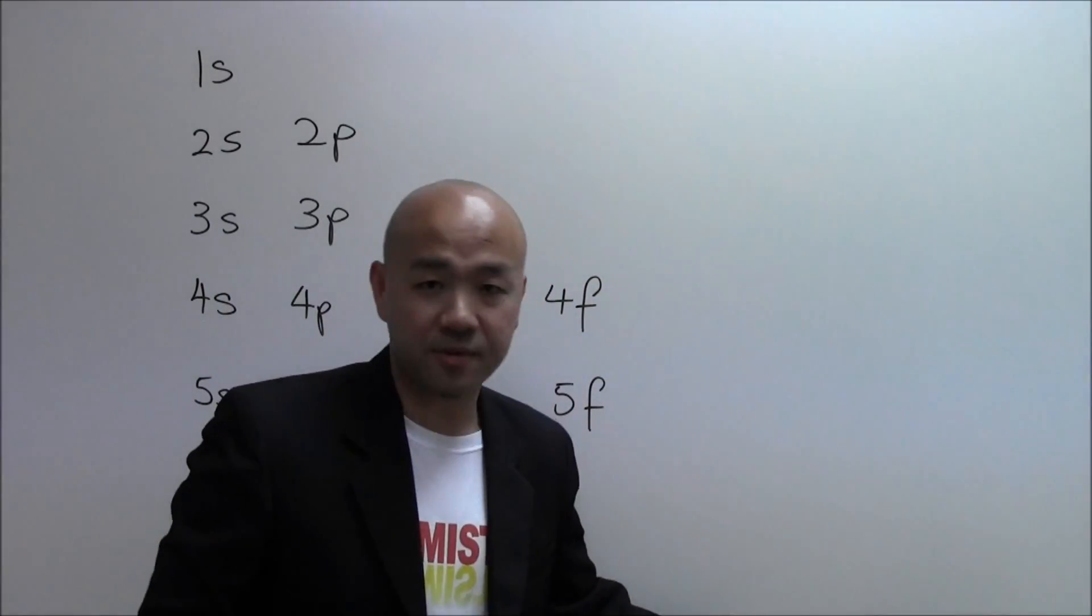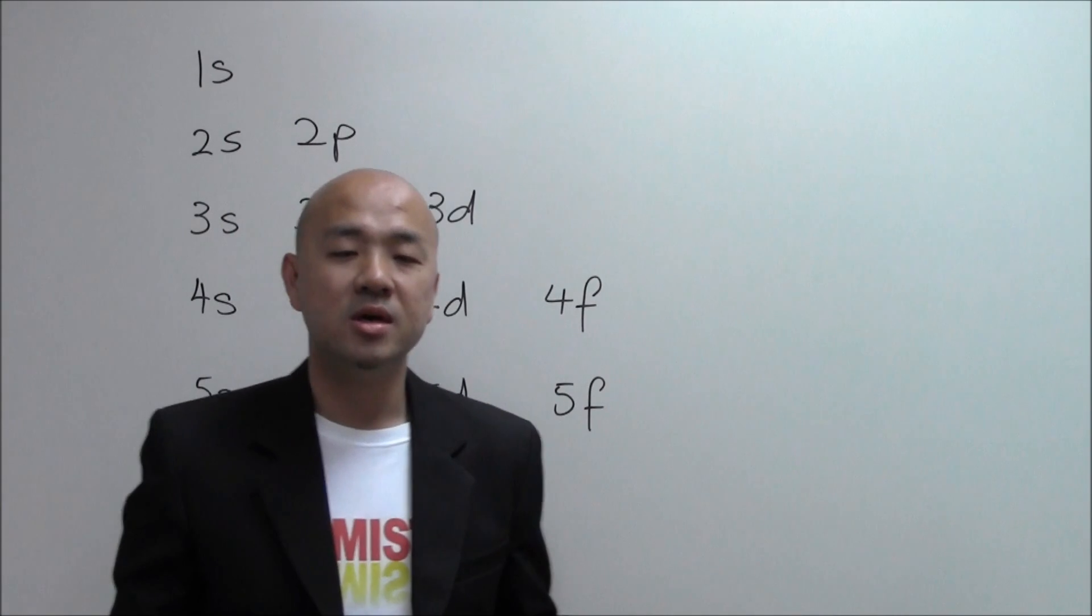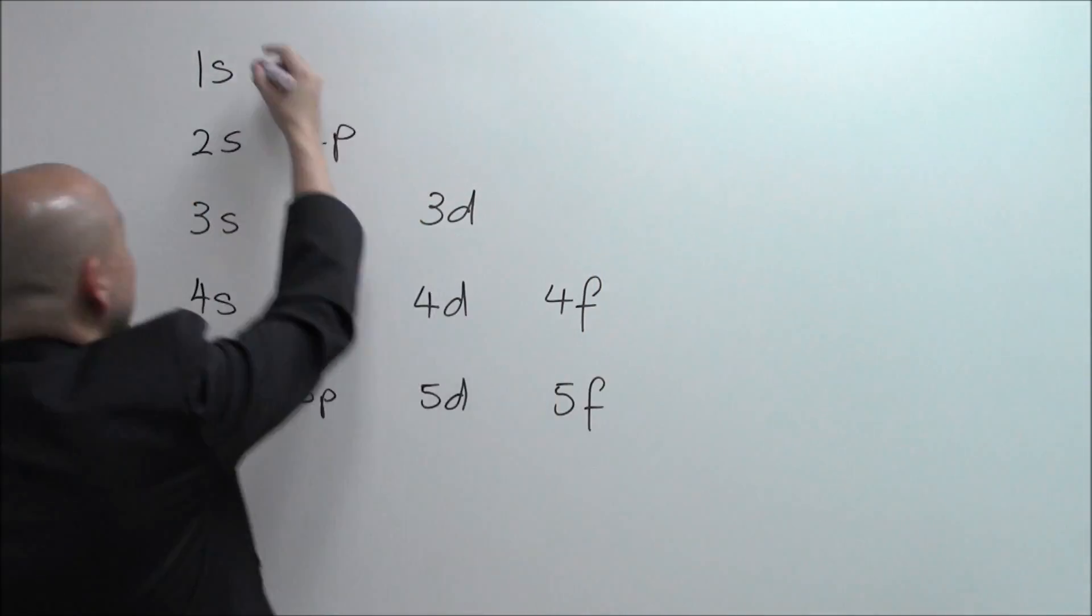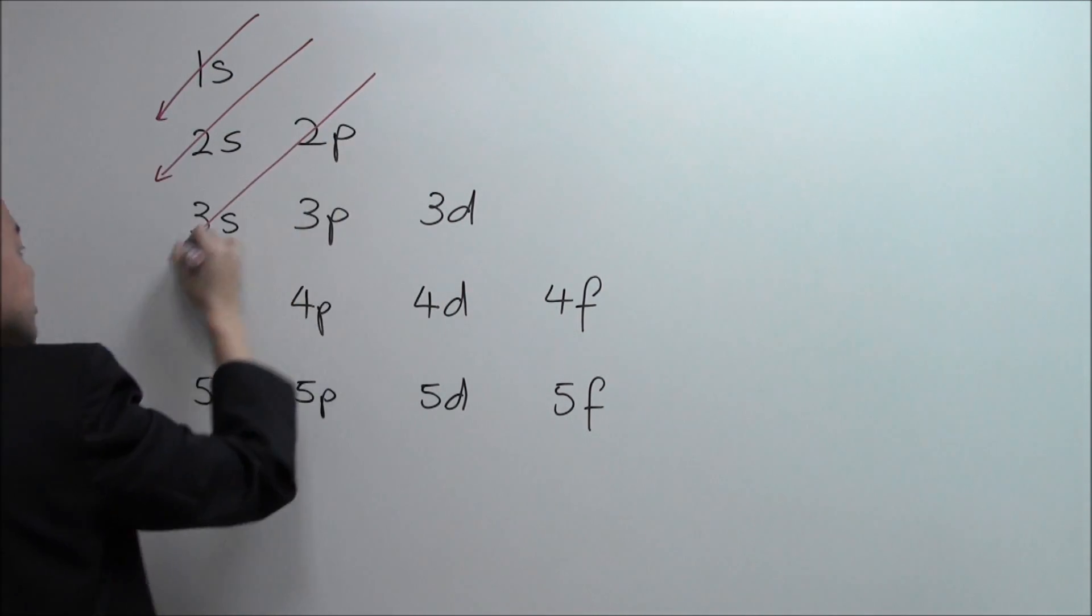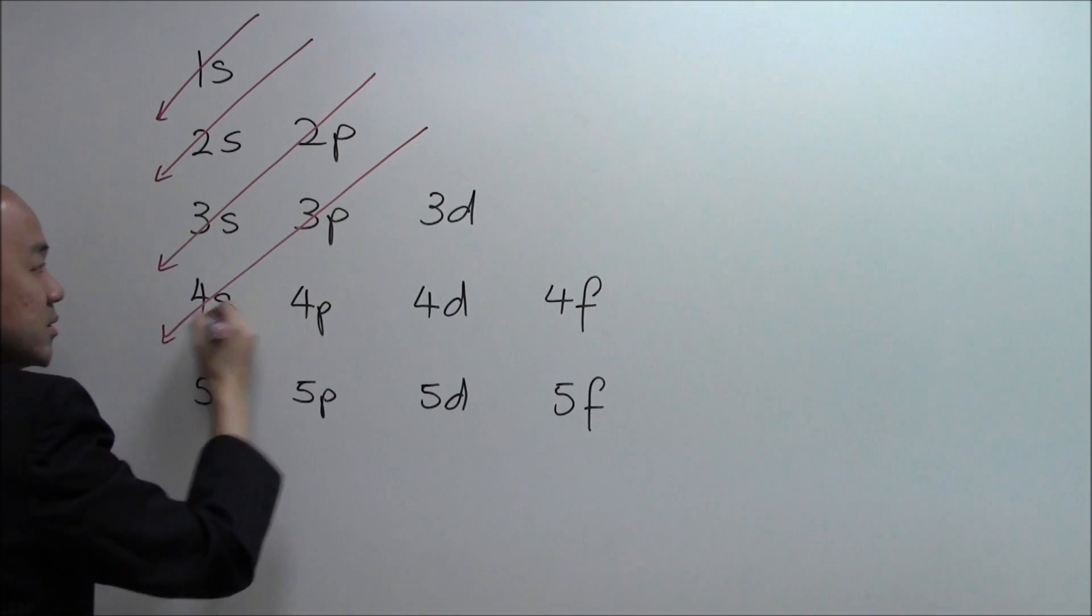Now once we have the sub-shells in order, what we need to do right now is to draw a diagonal line down from the top right hand corner. Like this. And followed by this one, so on and so forth.